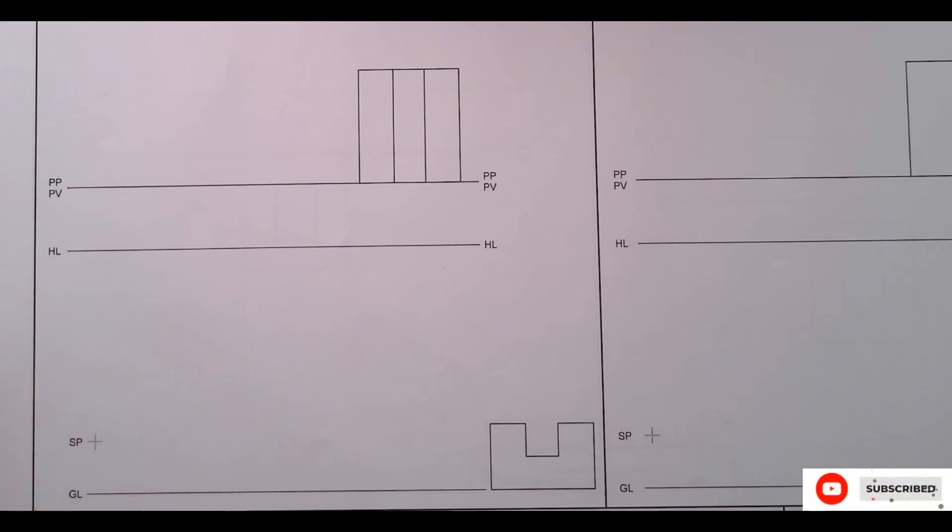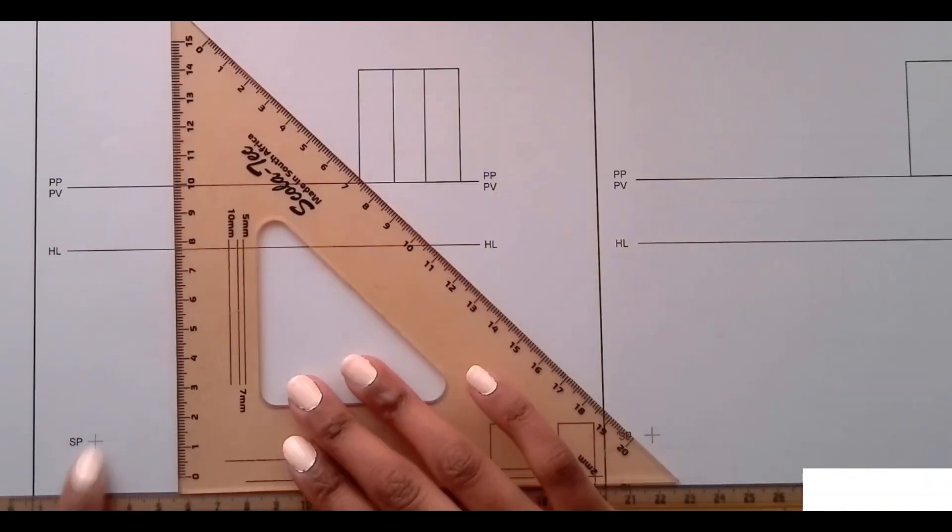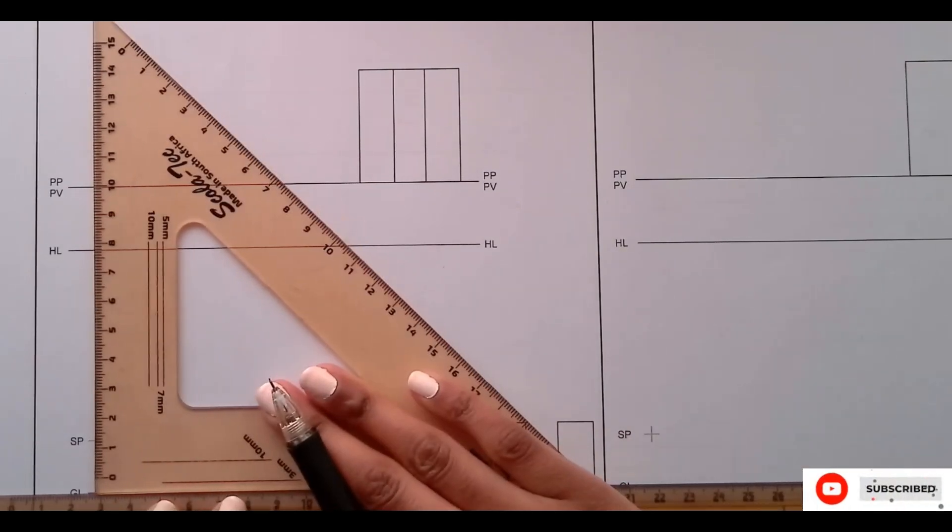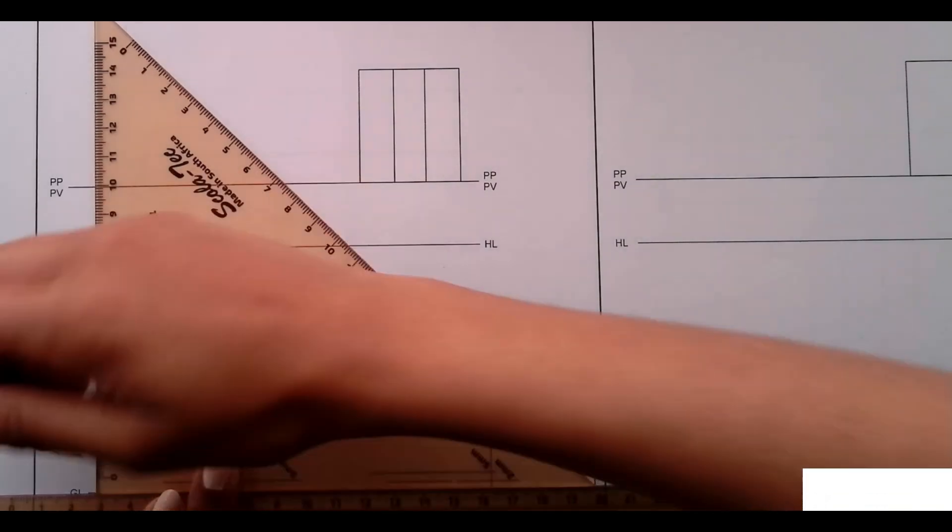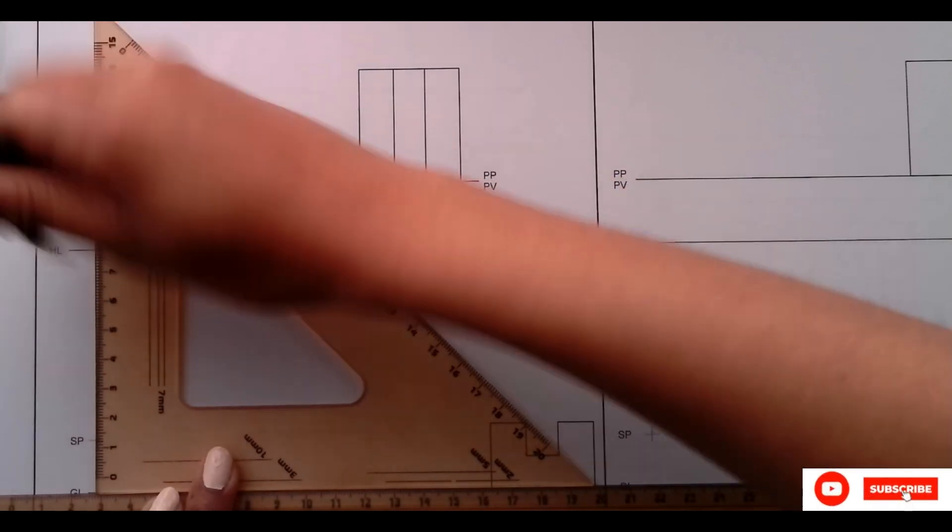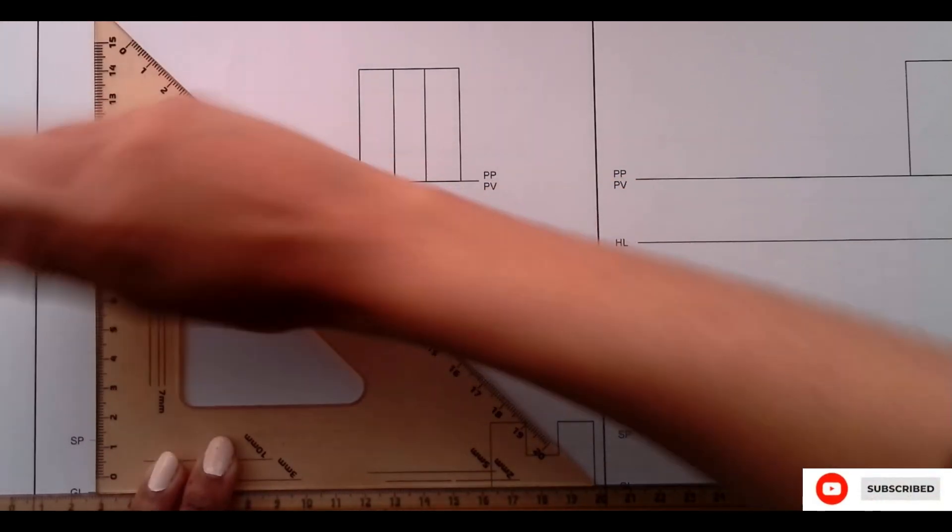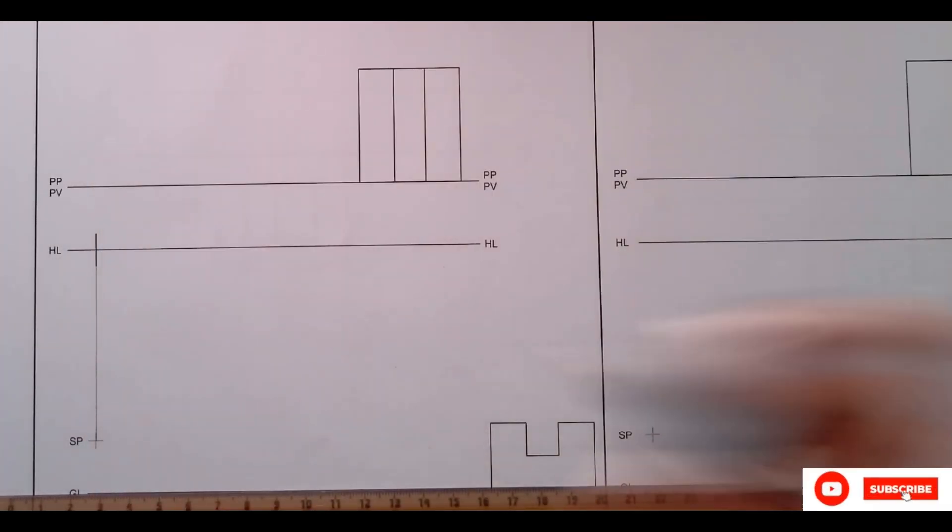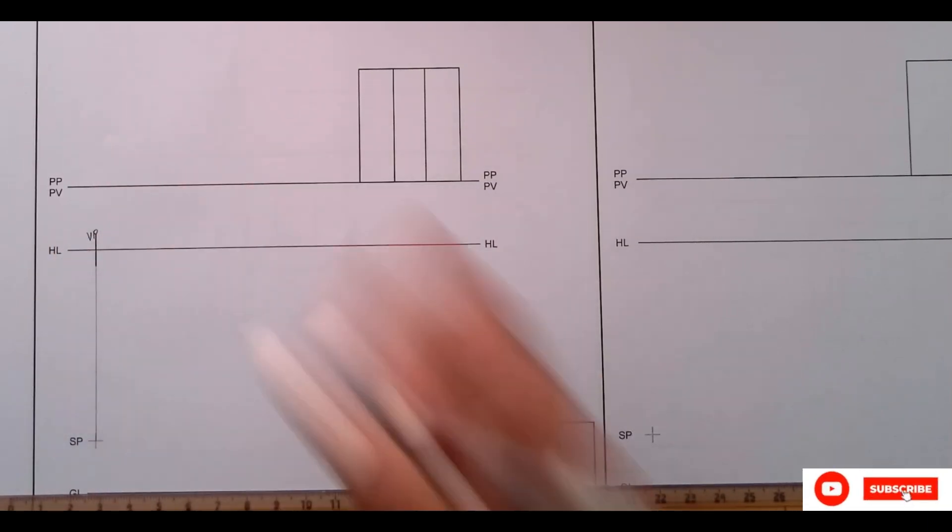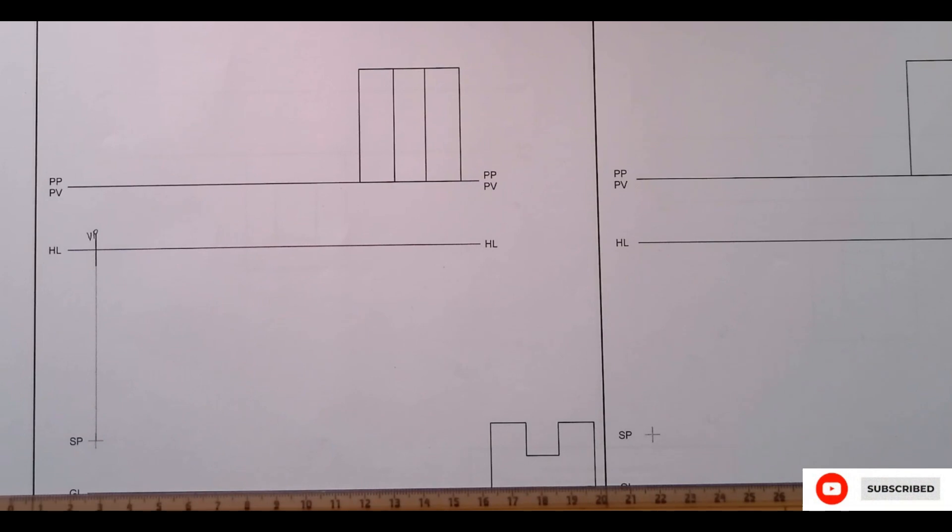So the first thing that I'm going to start with is getting my vanishing point. So from the stationary point, I'm just going to extend it up. Immediately I calculate there and label it VP, which is vanishing point.